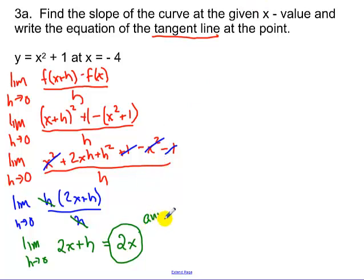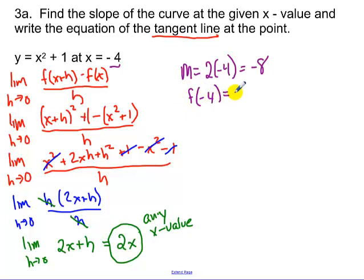So this is for any x value. We specifically want to find this at negative 4. So I plug in negative 4. So our slope would be 2 times negative 4, which is negative 8. We have to evaluate the function at negative 4 to get our y value.